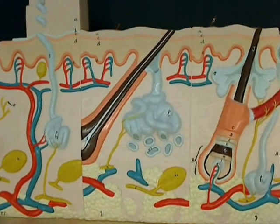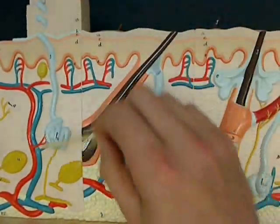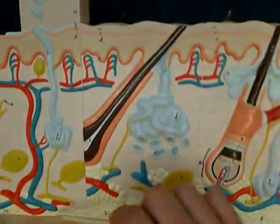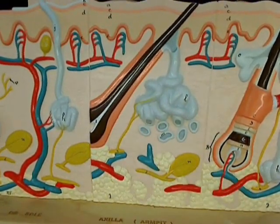Major layers: epidermis, dermis, and subcutaneous down at the bottom with the adipose tissue.